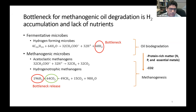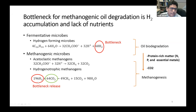Based on this information, the method we are proposing to stimulate the degradation of oil using indigenous methanogenic microbial communities consists of the combined supply of protein-rich matter and carbon dioxide. Carbon dioxide is used to remove the accumulated hydrogen in the form of methane gas, and protein-rich matter is used to supply the required nutrients for the activity of both fermentative microbes and methanogenic microbes.